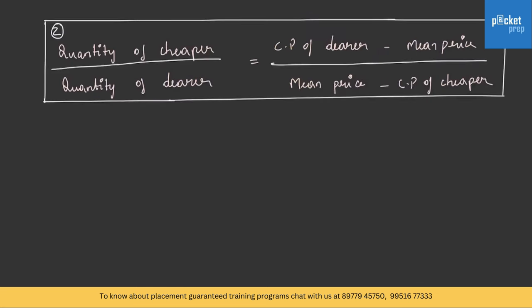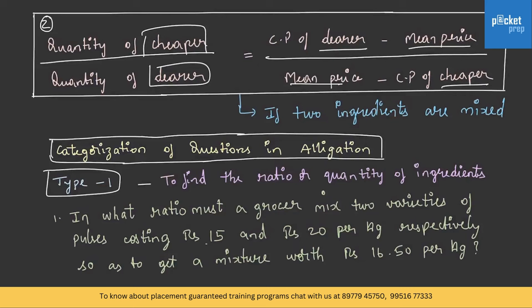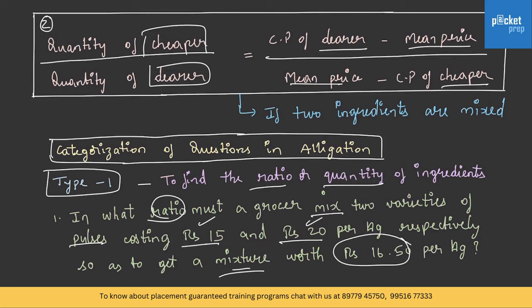If two ingredients are mixed, then quantity of cheaper by quantity of dearer equals cost price of dearer minus mean price, divided by mean price minus cost price of cheaper. Let's understand the categorization of questions. Type 1: to find the ratio or quantity of ingredients. For example, in what ratio must a grocer mix two varieties of pulses costing Rs. 15 and Rs. 20 per kg so as to get a mixture worth Rs. 16.50 per kg? We can solve this by using the rule of allegation.